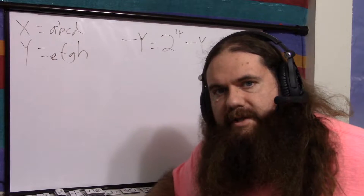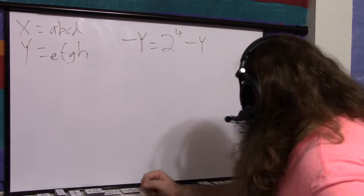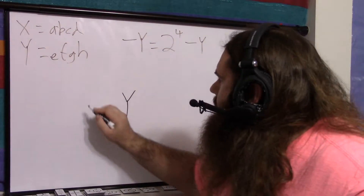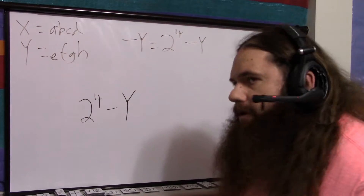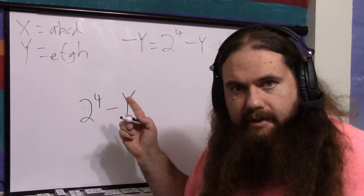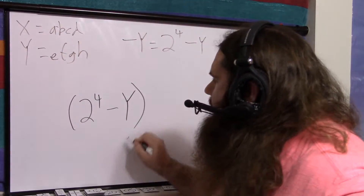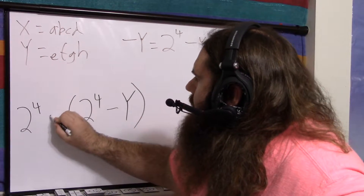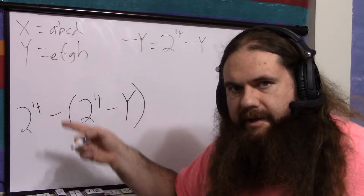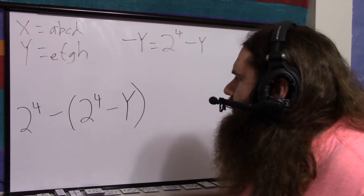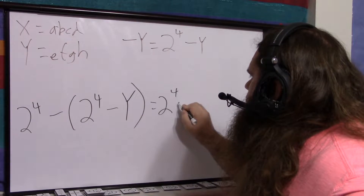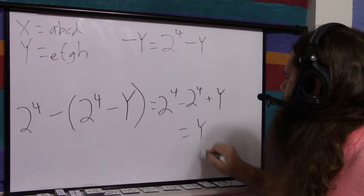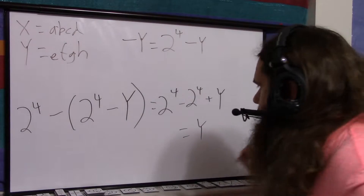So how do I prove that this is a reversible operation? Let's say we have Y, and I want to negate Y: 2 to the 4 minus Y. Now I'm saying that it's minus Y. What if I negate it again? This should get me back to positive Y. 2 to the 4 minus whatever — two's complement and then two's complement — equals 2 to the 4 minus 2 to the 4 plus Y, equals Y. So it's reversible. We get Y back.